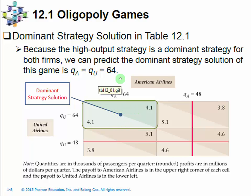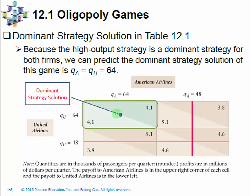In this game, we have a unique dominant strategy solution. That means there is just one dominant strategy for each player, and each player will play that one dominant strategy. That results in a single cell in the payoff matrix, so we have a clear prediction about what the rational players will do. The reasoning is based on rationality and logical reasoning by both players.